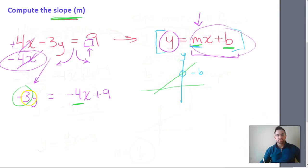So we need to get that y by itself, and then we'll have that coefficient of x, or rather the slope of m.